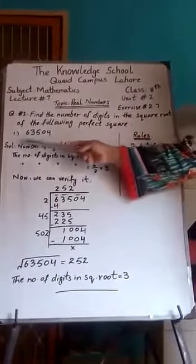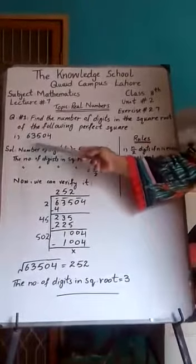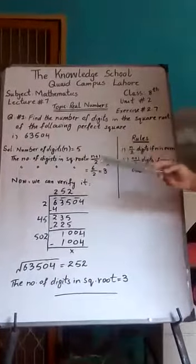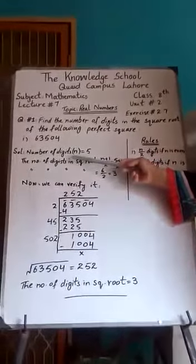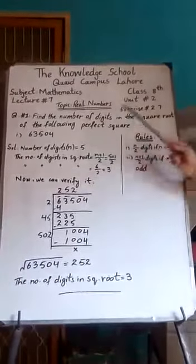The first part is 63504. Students, first of all for the solution we have to count the number of digits in this given number. Number of digits ko ham small n se represent karenge: 1, 2, 3, 4, 5. Kitne digits hai? 5.